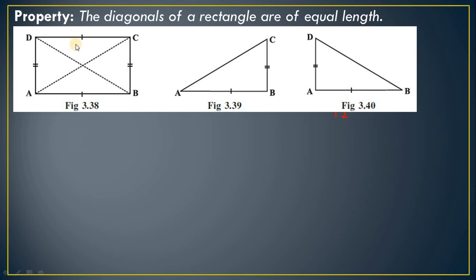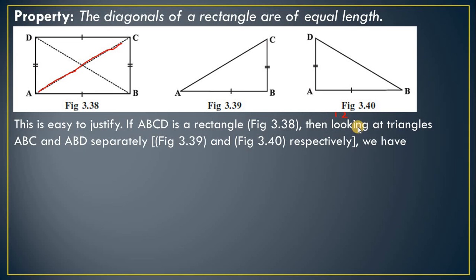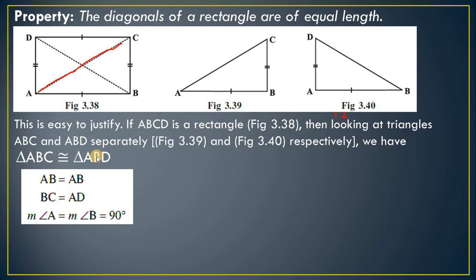To prove this, the rectangle is divided into two triangles. Consider triangle ABC and triangle ADB. We need to show that diagonal AC equals diagonal BD. In triangles ABC and ABD, the measurement of BC and AD are the same since they are opposite sides of the rectangle.